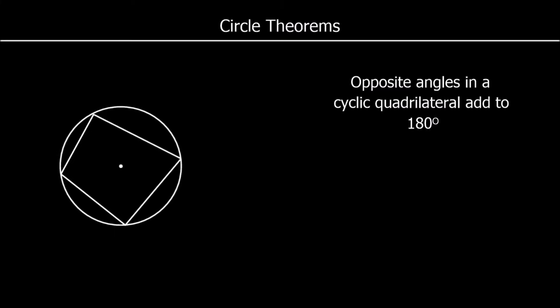Opposite angles in a cyclic quadrilateral add up to 180 degrees. A cyclic quadrilateral is a four-sided shape inside a circle, where each vertex touches the circumference. The two opposite angles — this red angle and this green angle — add up to 180 degrees. So would the other two angles. The green angle and the red angle add up to make 180 degrees.